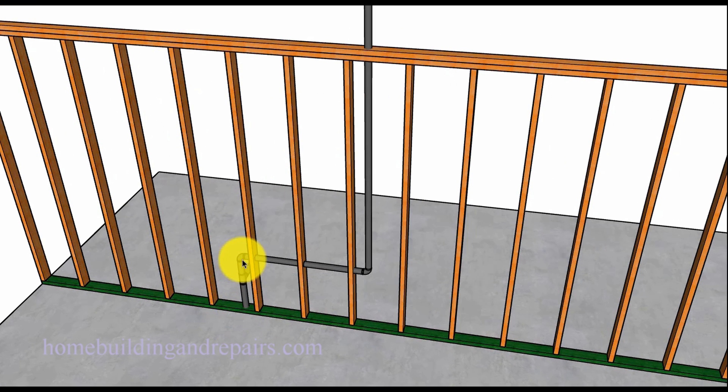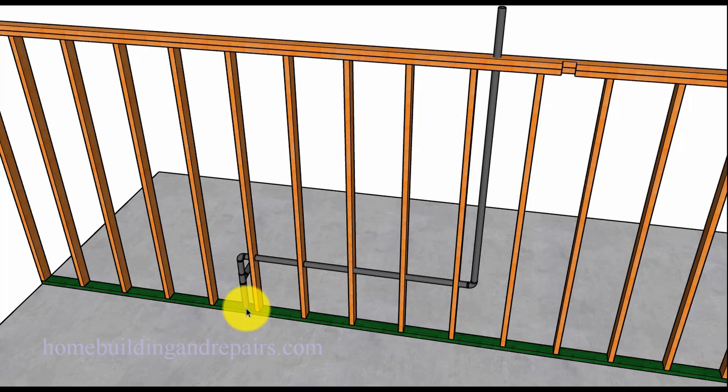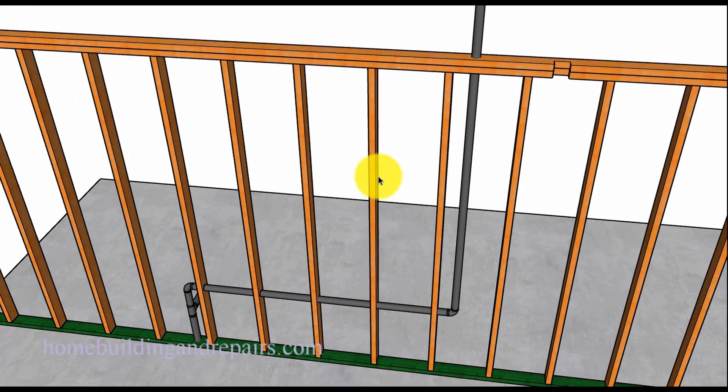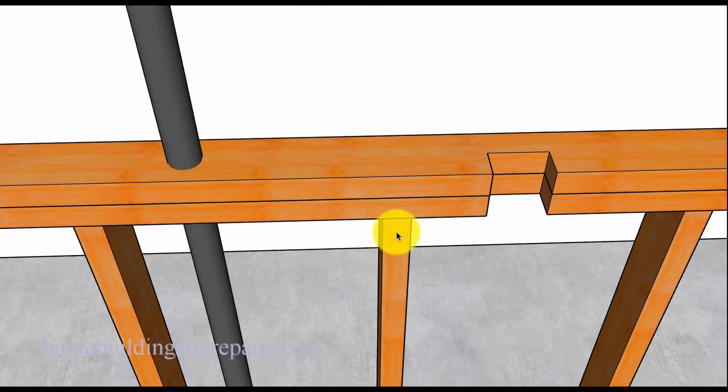So you can do something like this on a non load bearing wall. It does not say anything about where you cannot go through consecutive wall framing studs. So something like this seems like it would be acceptable. You could drill through five wall framing studs on a non load bearing wall.